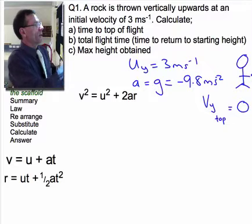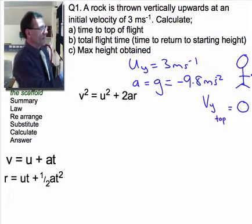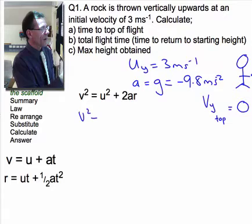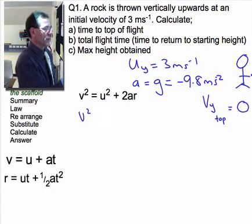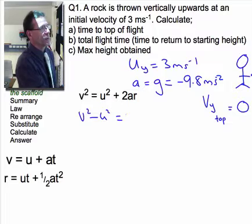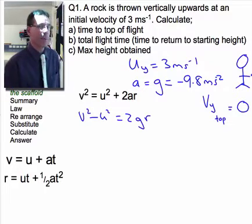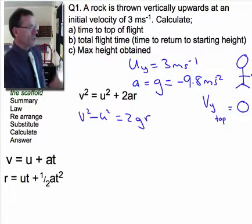So we've got v squared is u squared plus 2ar, well that's gonna be v squared, I've now chosen my law, I'm now going to rearrange it. That's gonna be v squared minus u squared equals 2, remember it's g because it's accelerating under gravity, gr.